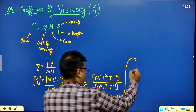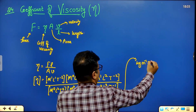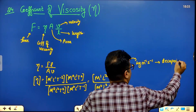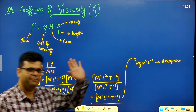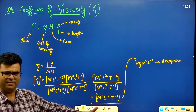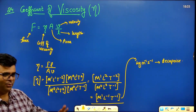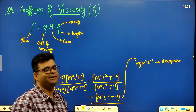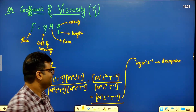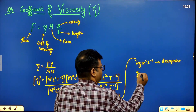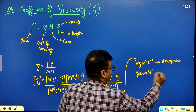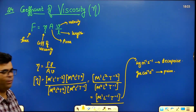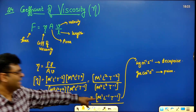Units of eta: kg·m⁻¹·s⁻¹. Its special SI name is decapoise (also called poiseuille). The CGS unit is gram·cm⁻¹·s⁻¹, called poise. You will need the dimensions; the unit names are less critical.